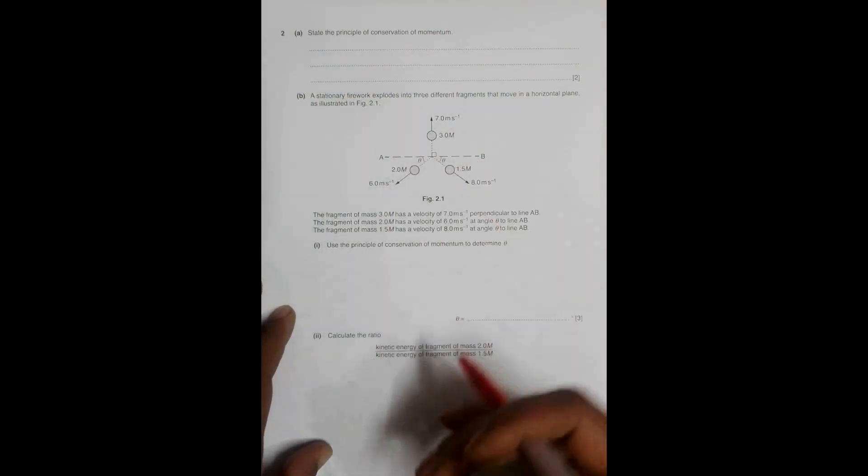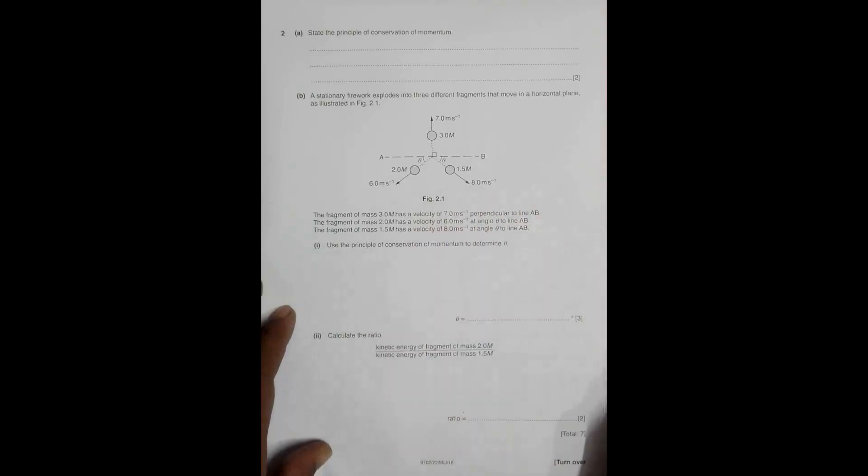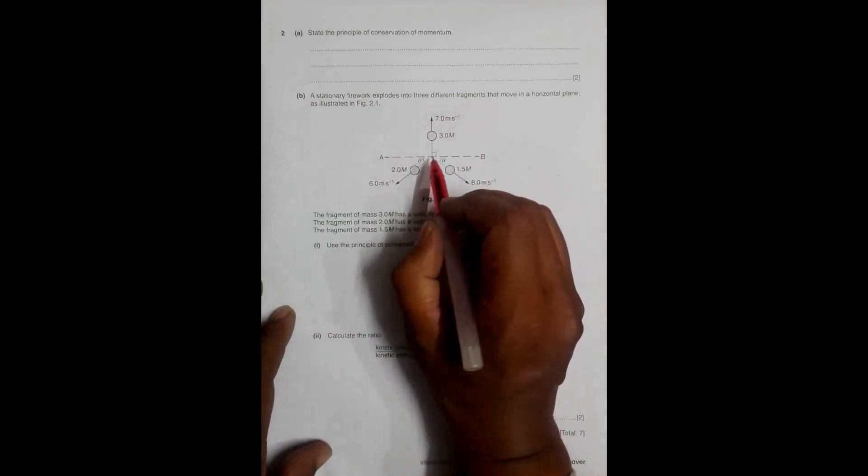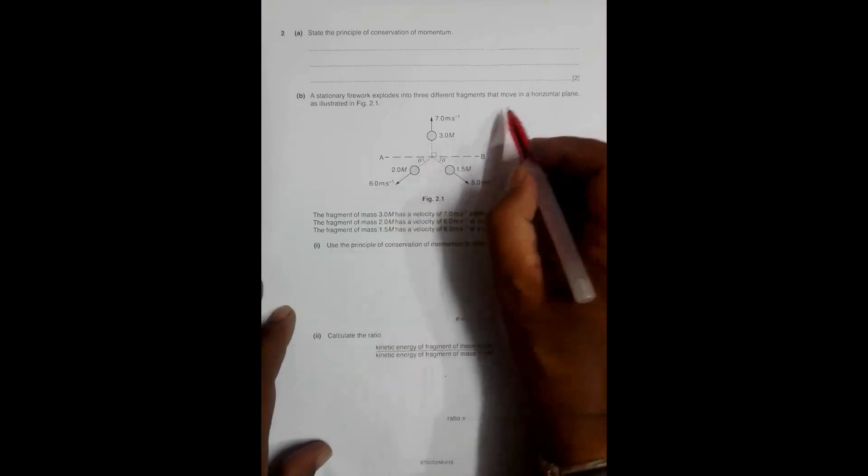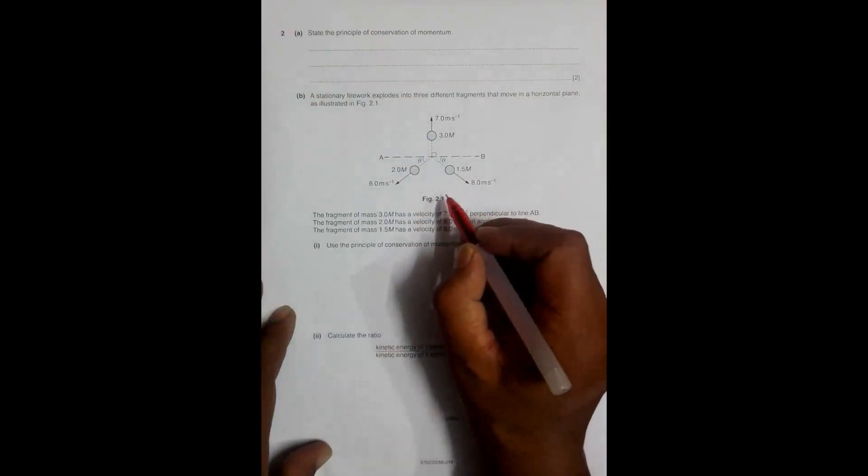So it says that a stationary firework explodes into three different fragments. The stationary firework is somewhere here, it splits into three different fragments that move in a horizontal plane, as illustrated in figure 2.1.